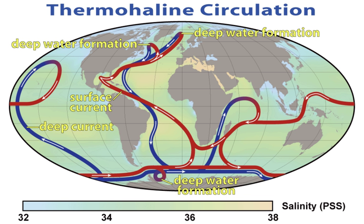Between 1925 and 1927 the Meteor expedition gathered 70,000 ocean depth measurements using an echo sounder, surveying the mid-Atlantic ridge. Sverdrup, Johnson and Fleming published The Oceans in 1942, which was a major landmark. The Sea, in three volumes covering physical oceanography, seawater and geology, edited by M.N. Hill, was published in 1962, while Rhodes Fairbridge's Encyclopedia of Oceanography was published in 1966.